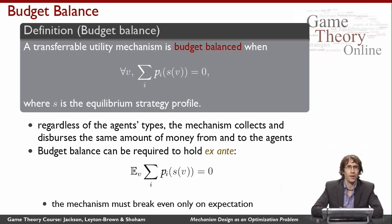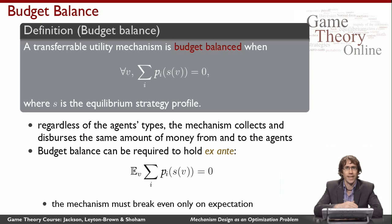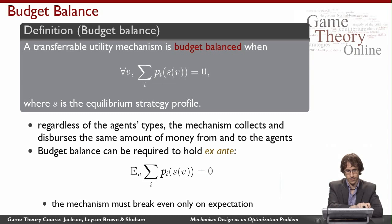I can also make other variations. It might be too strong to say that no matter what the agents' types are, I never lose or gain any money. I might prefer to talk ex-ante across the agents' utilities — this mechanism is going to get run many times, so I care about my long-run profit or loss. So I want to say that on expectation over the agents' valuations, it's the case that I'm strictly budget balanced, or if I prefer, weakly budget balanced.